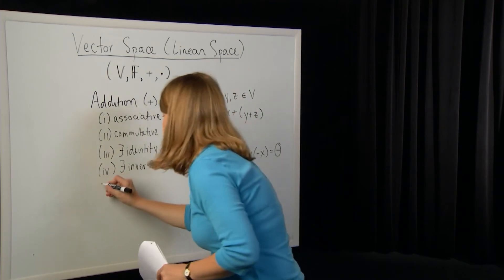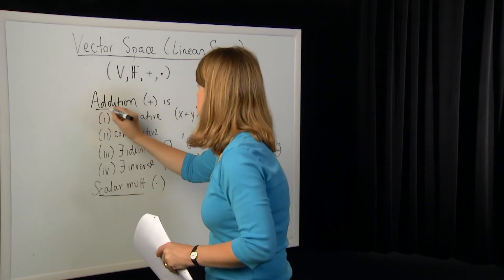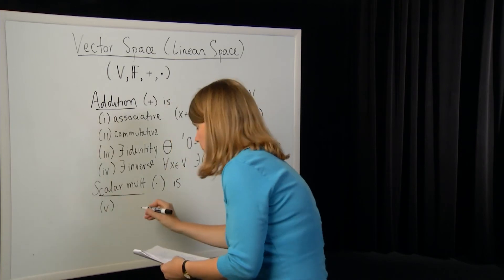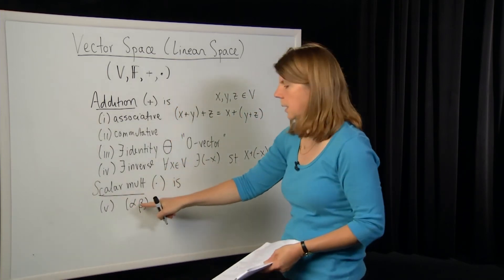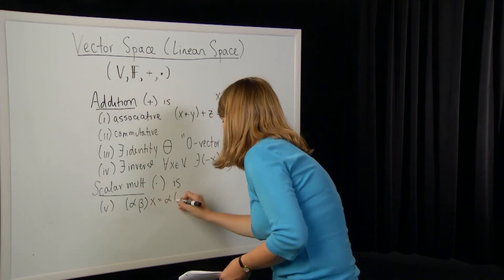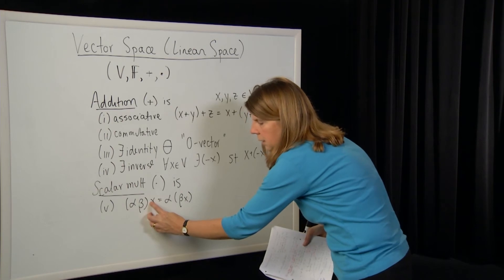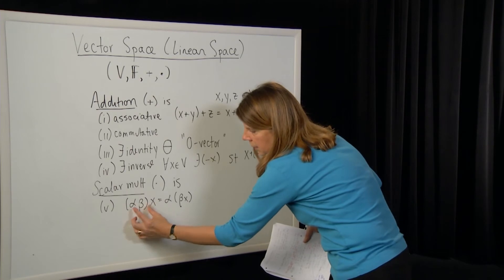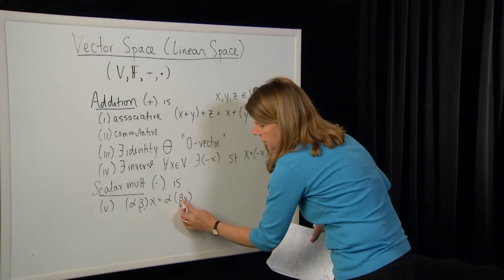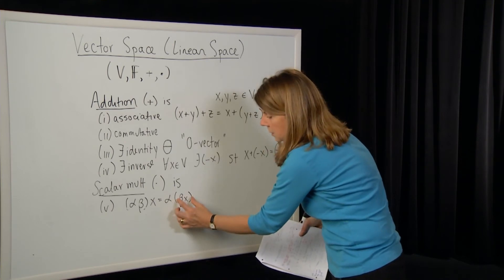For scalar multiplication, we have a set of rules. If you take two scalars alpha and beta, multiply them using the field operation, and then multiply by a vector x in V, that equals alpha times (beta times x). The operation on the left uses the field multiplication, while on the right we perform scalar-vector multiplication twice.